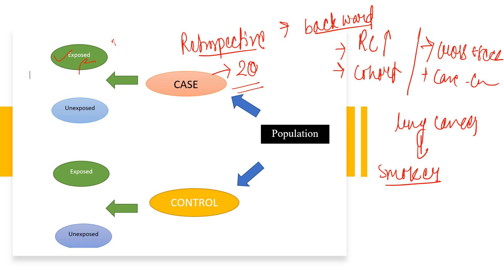After finding the cases, we find the exposed and unexposed groups. Here, the exposure is smoking. Suppose 15 of the 20 lung cancer patients smoke — they are placed in the exposed group. The 5 people who don't smoke are placed in the unexposed group. So among the 20 lung cancer patients, 15 smoke and 5 don't smoke.